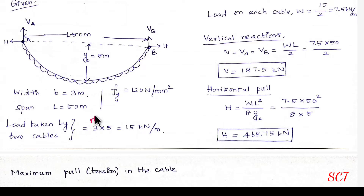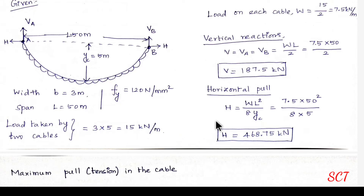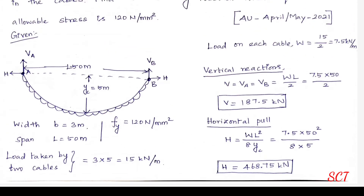The unit is kN per m². The meter is cancelled, giving kN per m. So 3 × 5 = 15 kN/m total load. Since there are two cables, the load on each cable is 15 ÷ 2 = 7.5 kN per m.